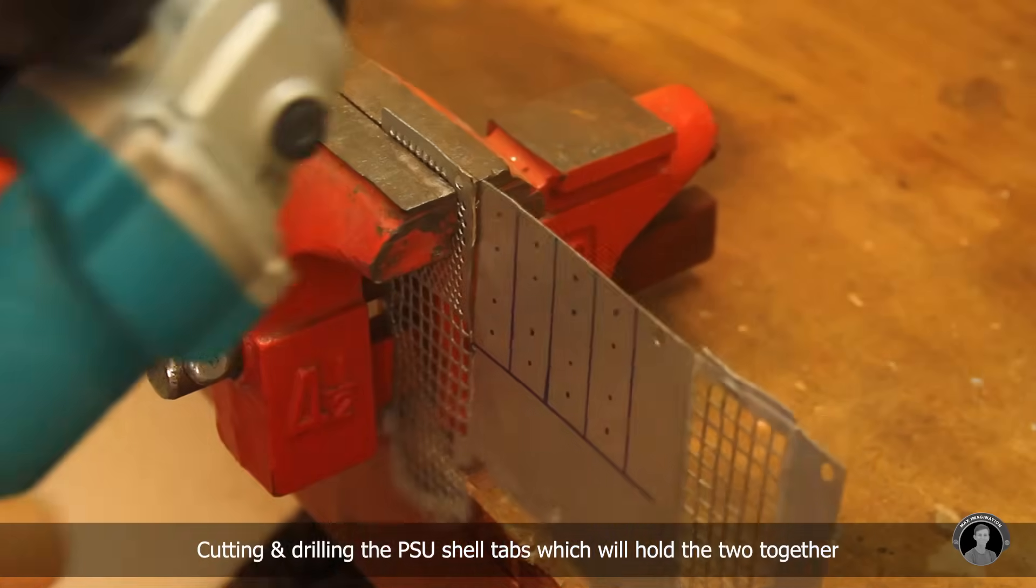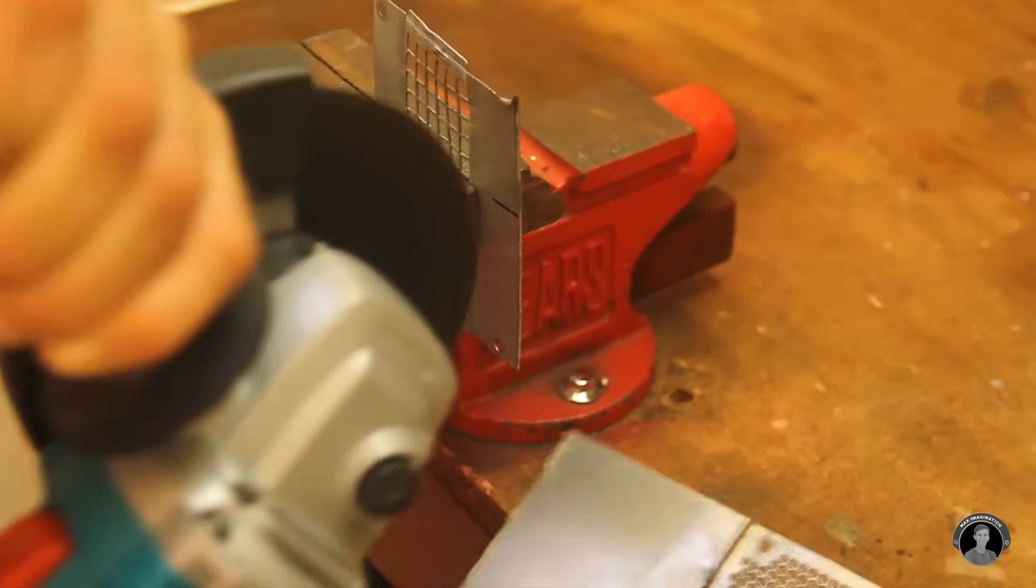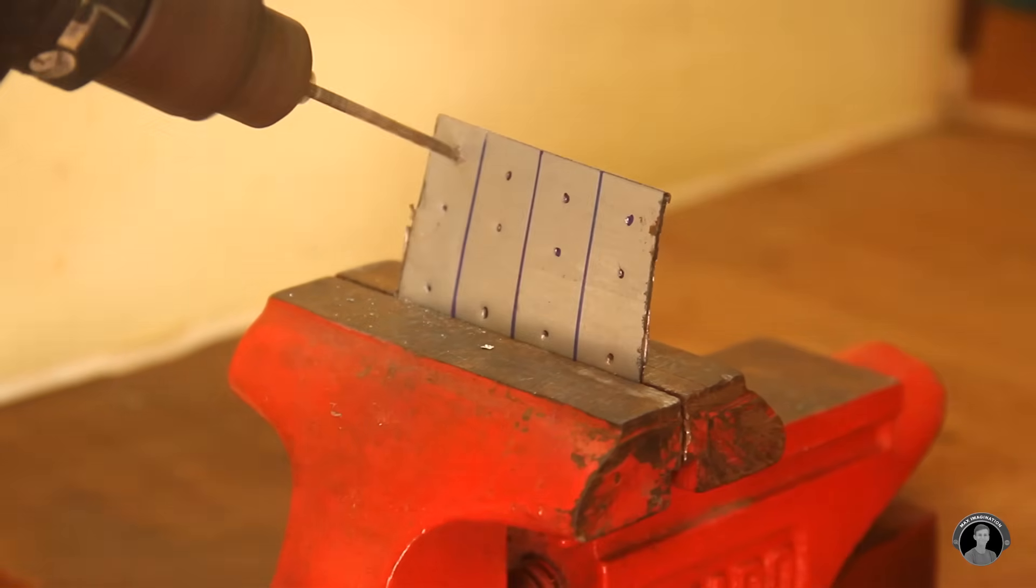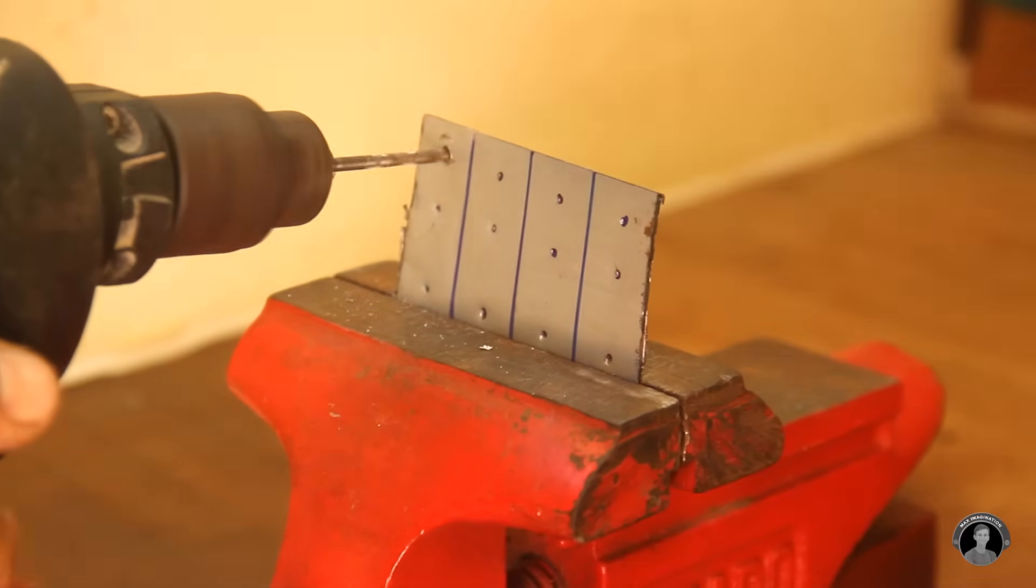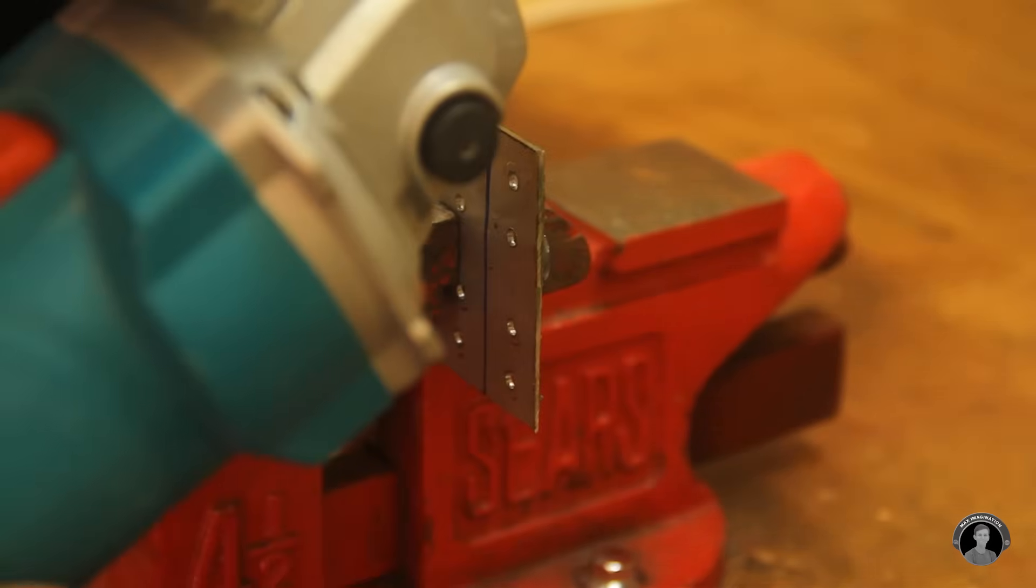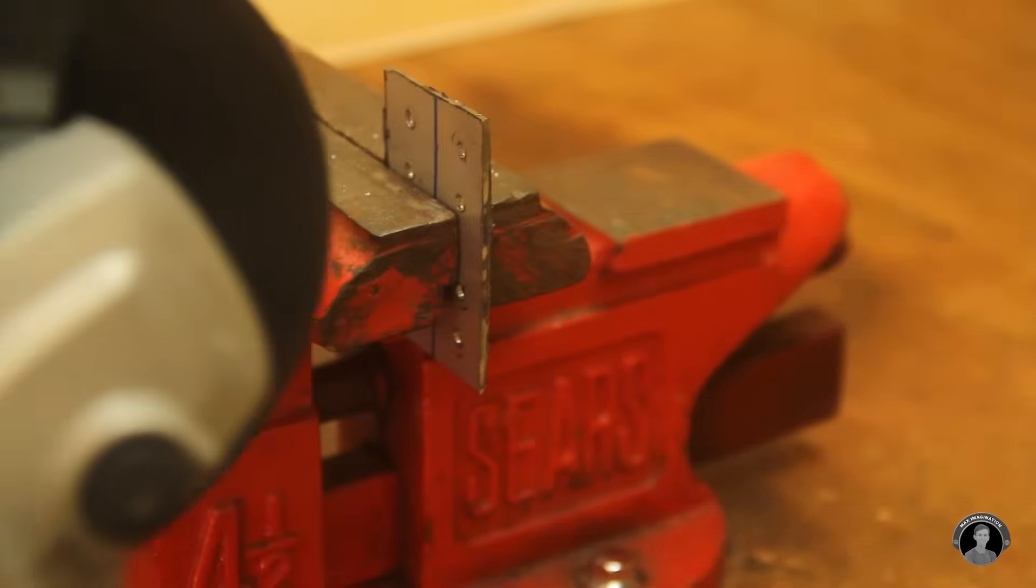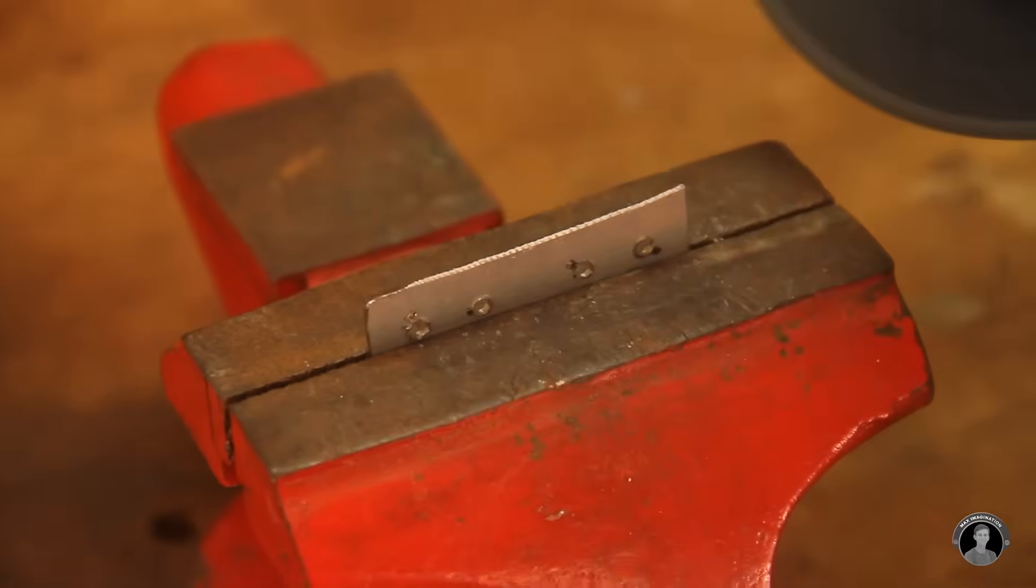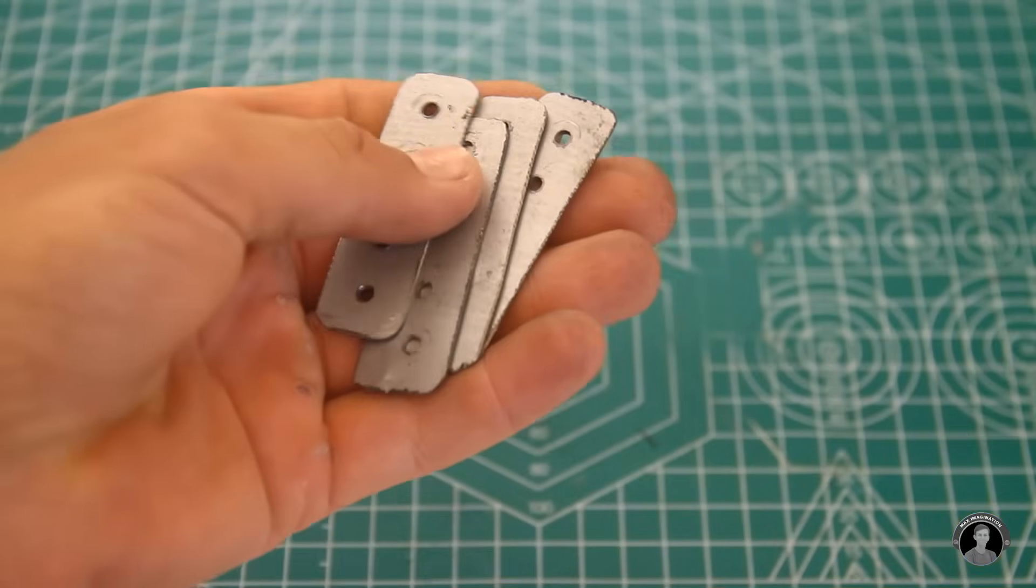And yes, if you're aiming to make a metal casing for your power supply, you will most likely need an angle grinder. So the first thing you're going to want to do is cut four of these metallic tabs, which will hold the two shells together. These four will eventually be held on with screws. With these tabs being cut and drilled accordingly...